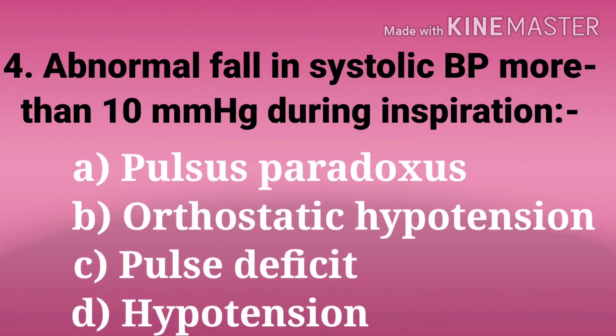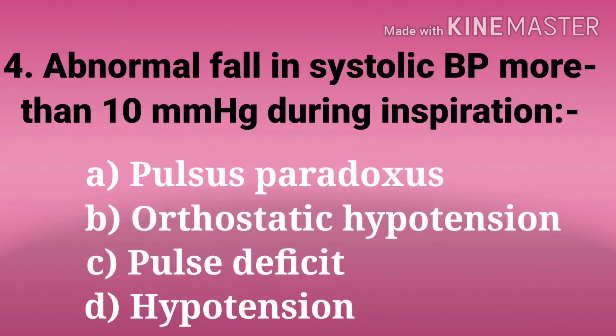Fourth question: abnormal fall in systolic BP more than 10 mmHg during inspiration. The options are pulsus paradoxus, orthostatic hypotension, pulse deficit, and hypotension.